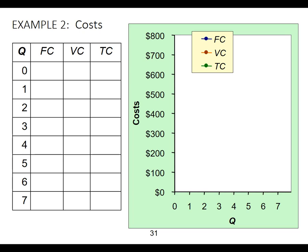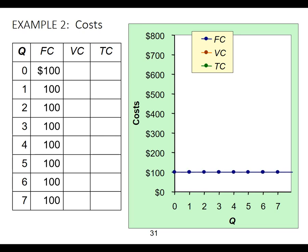So first off, we've got a situation where we want to graph FC, which is fixed cost, VC, which is variable cost, and TC, which is total cost. Fixed costs are going to be $100. We've already established they do not change based on how much I produce in the short run. So it's just going to be a perfectly horizontal line right at $100.